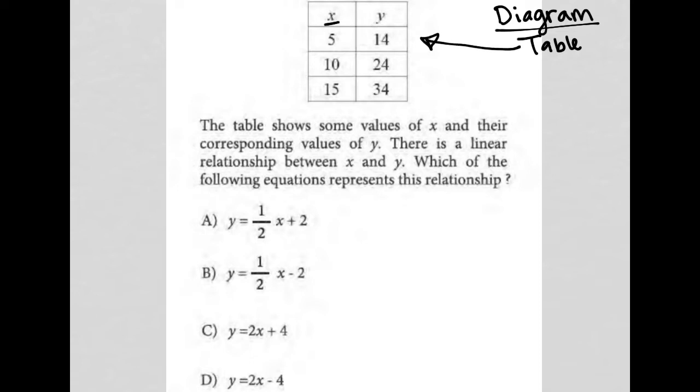This is an XY table. So all of the points provided here are ordered pairs. So 5, 14, 10, 24, and 15, 34, which means if we want it, we could graph it. But I'm going to read the question first and see if we should graph things or if there's some other process that we should go through to answer this question.